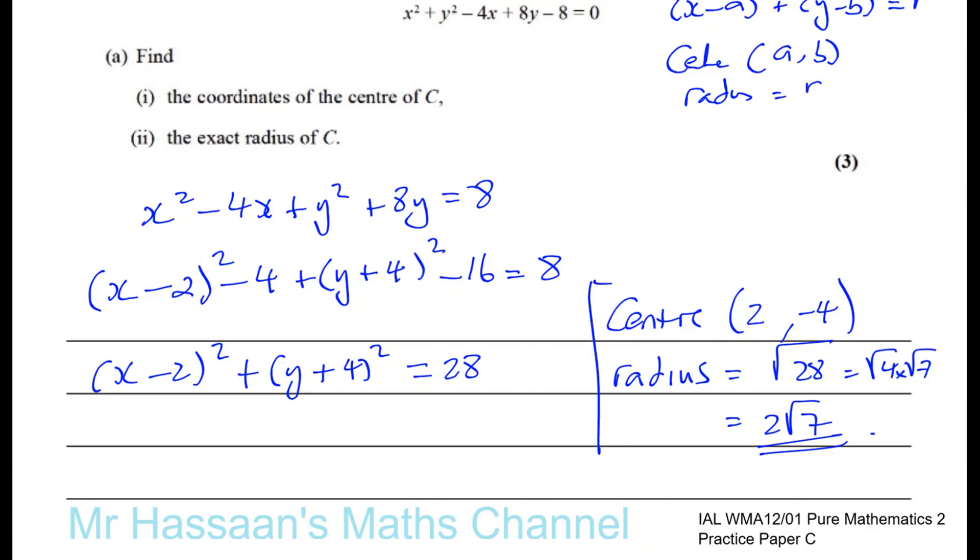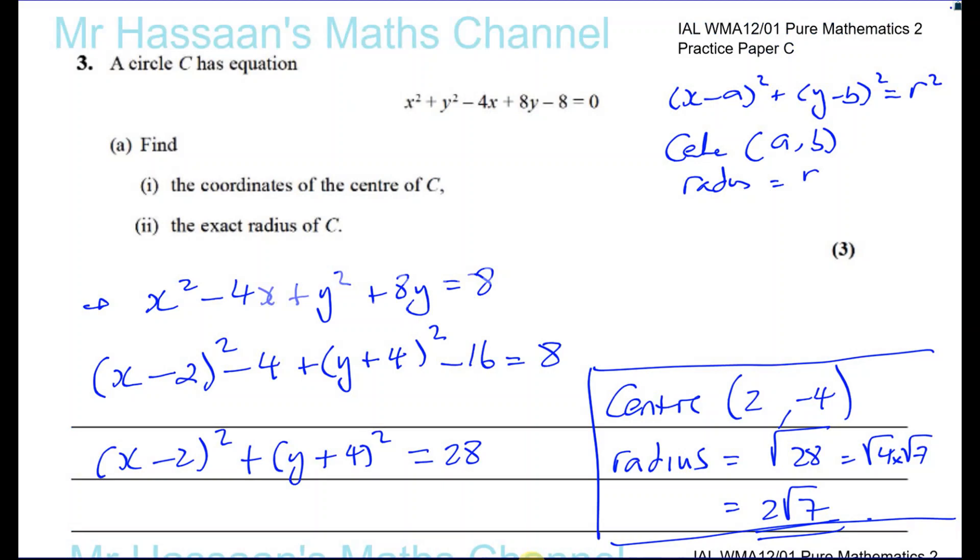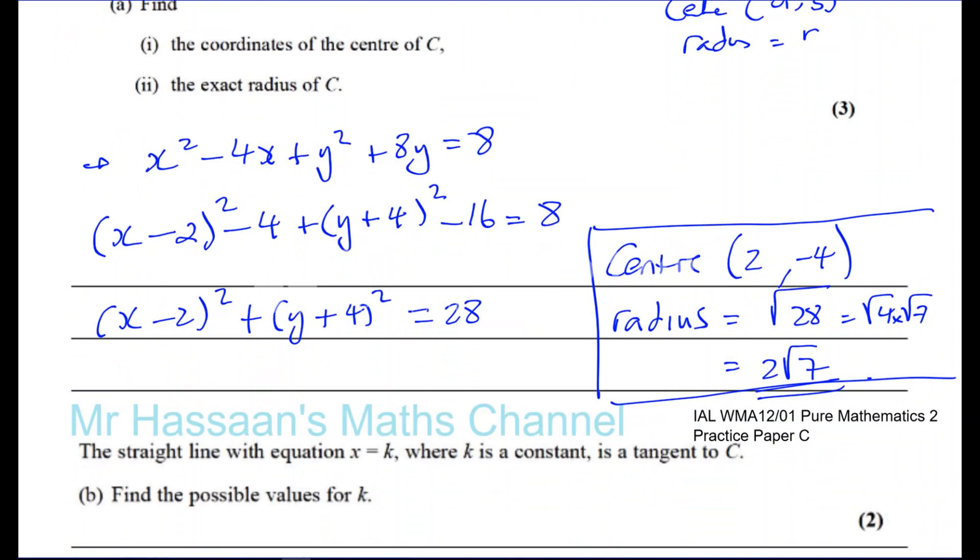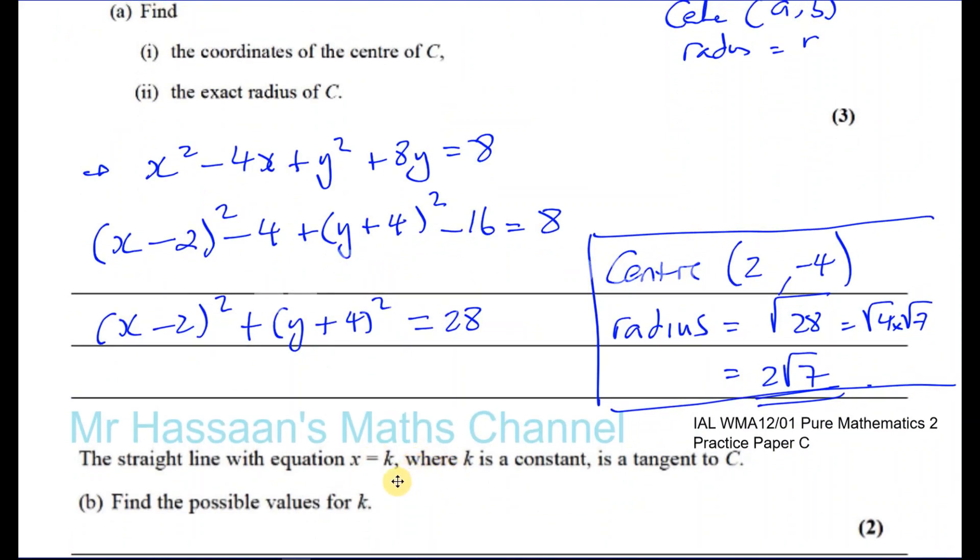So there's the radius and there's the center. This is the answer to part A. Now for part B. It says here, the straight line with equation x equals k, where k is a constant, is a tangent to C. Find the possible values for k.